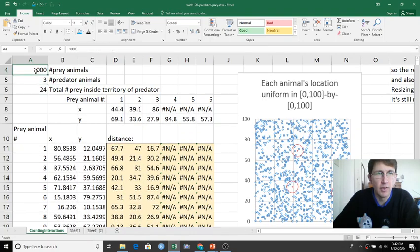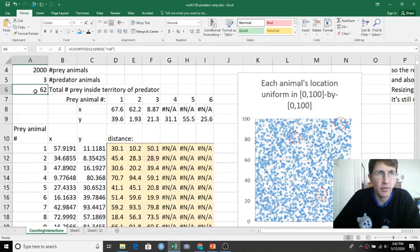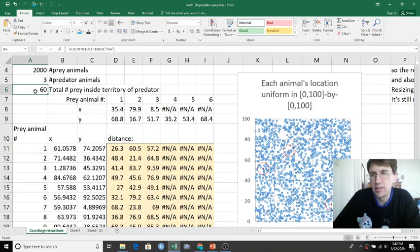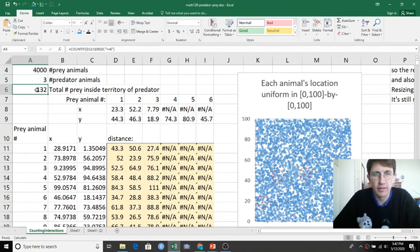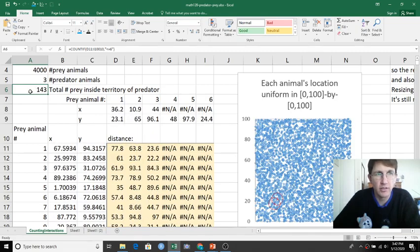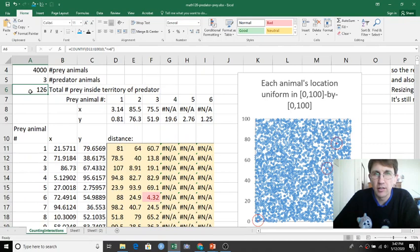If I double this again to 2,000, does it make sense that this roughly doubled from about 35 to about 70? And then if I double this again to 4,000, does it make sense that this doubled again from 70-ish to somewhere like 140? When we doubled the number of prey animals each time, the total number of prey that were vulnerable to predators within their little circle of hunting region increased.